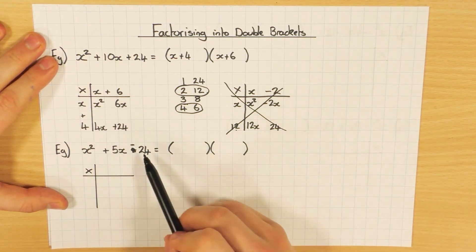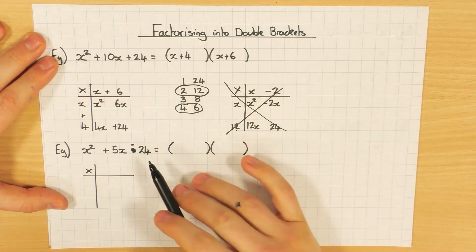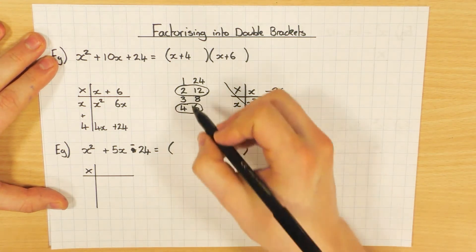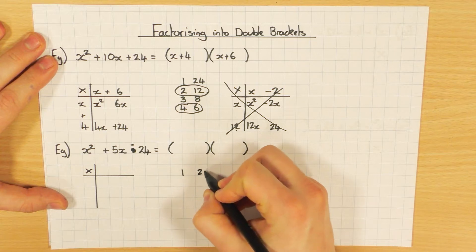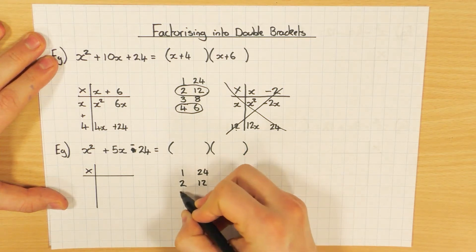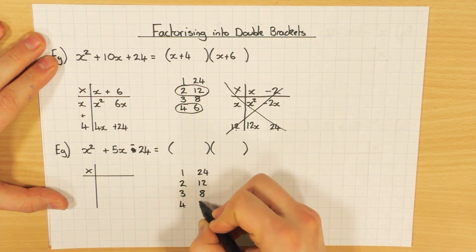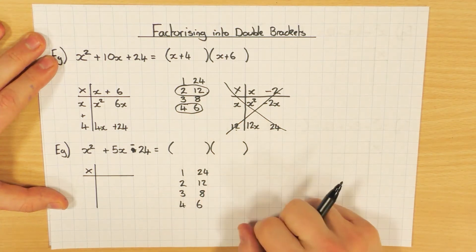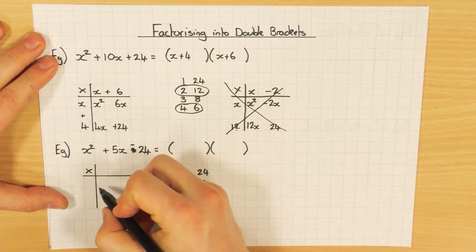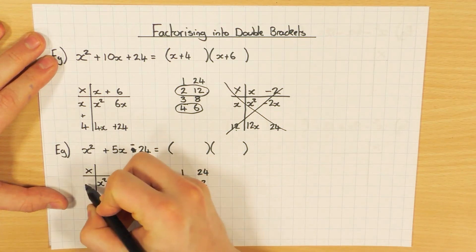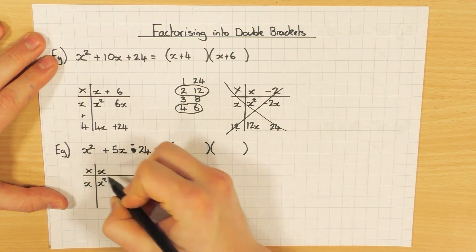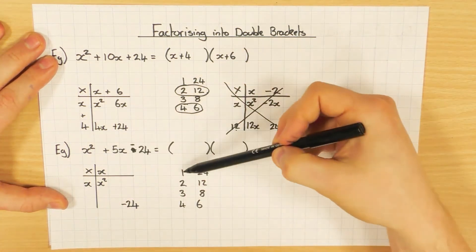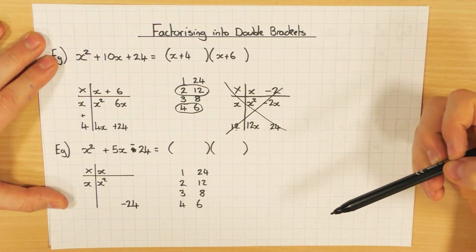Next one here, I've got minus 24. Don't worry about that being minus 24. We're still just going to look at numbers that multiply to get 24. So, I'm going to have exactly the same as before. 1 and 24, 2 and 12, 3 and 8, 4 and 6. Okay? So, don't worry about being minus 24. I'm just worried about what numbers multiply to get 24. Let's fill in what we know. So, I know that's going to be an x squared, and therefore that's an x and an x. And that's going to be minus 24 there. Now, this time I'm after a 5. So, which one of these pairs can I use to get a 5?